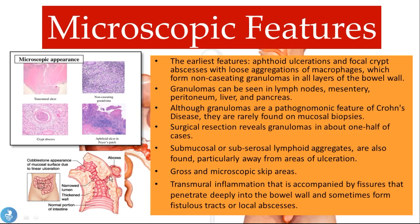From the microscopic features we can note the transmural ulcers, non-caseating granulomas, crypt abscesses, and aphthous ulcers, all visible microscopically from samples of injured tissue. Transmural inflammation accompanied by fissures — breaks in the bowel wall — can lead to fistulous tracts and local abscesses, which result from drainage of inflamed pus, mucus, and fecal matter, causing local infection, highlighting how debilitating the disease can be.